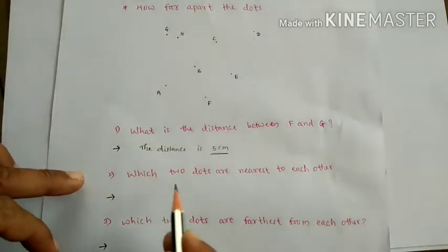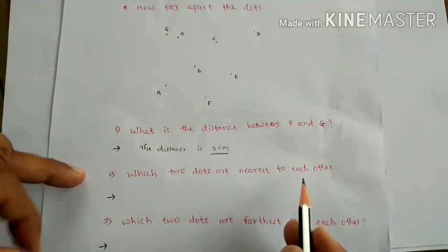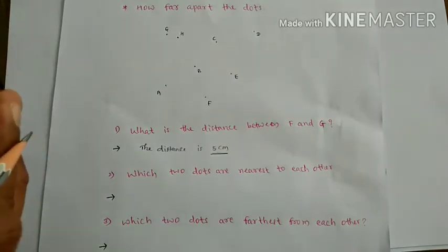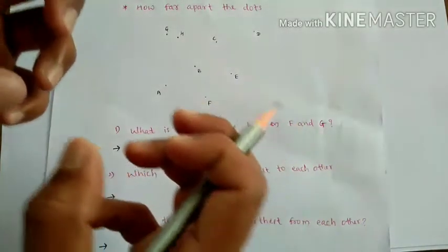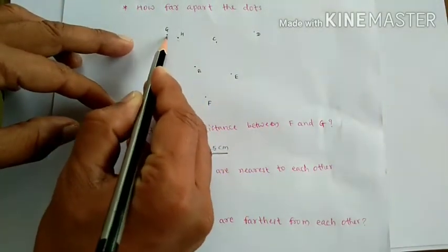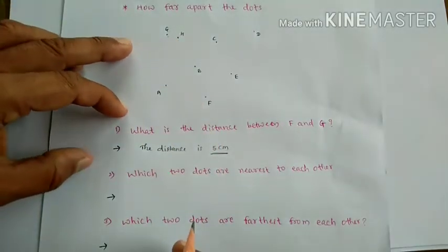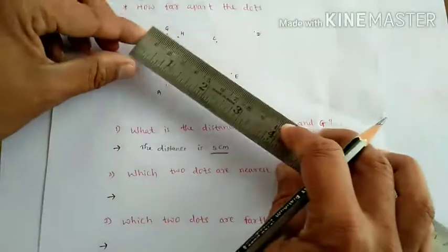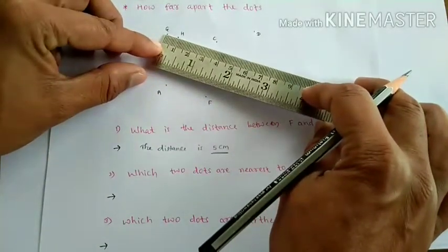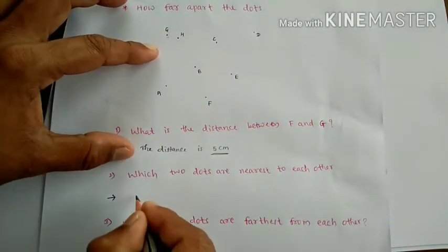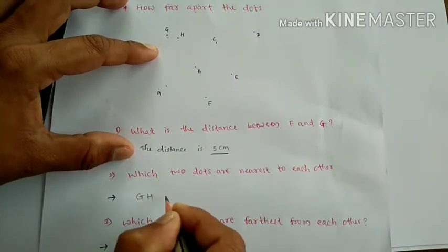The next question is: which two dots are nearest to each other — meaning which two dots are very close to each other? We can see that G and H are very close to each other. When measured with the scale, it is around one centimeter. The remaining dots are not as close as G and H.